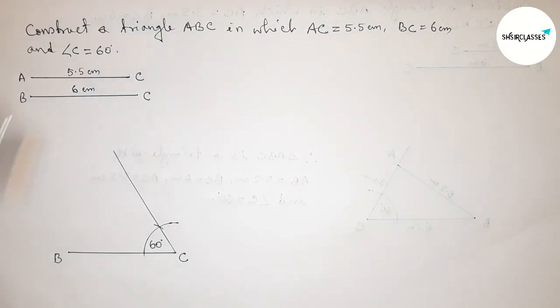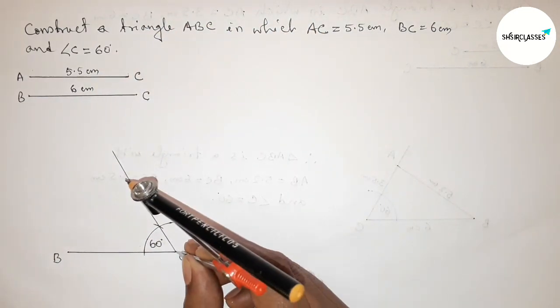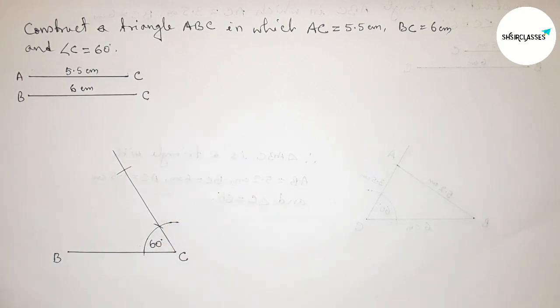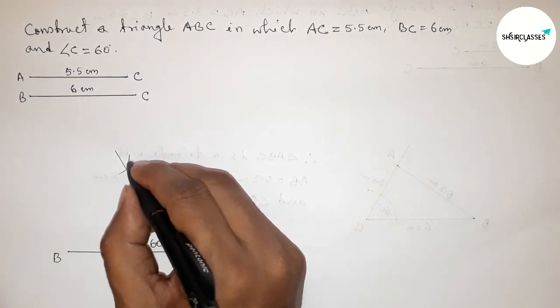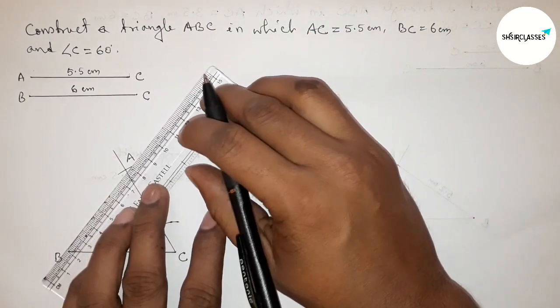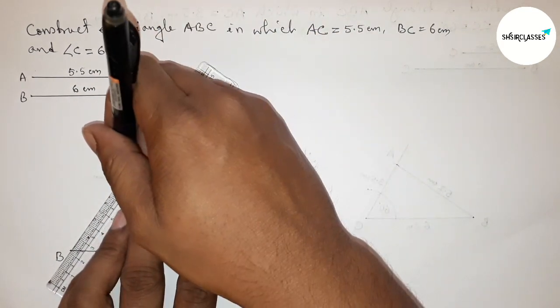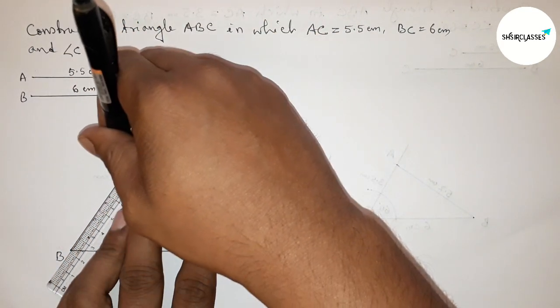Now putting the compass on the point C and cut here. So now taking here a point A. Now joining AB side to get here the triangle ABC.